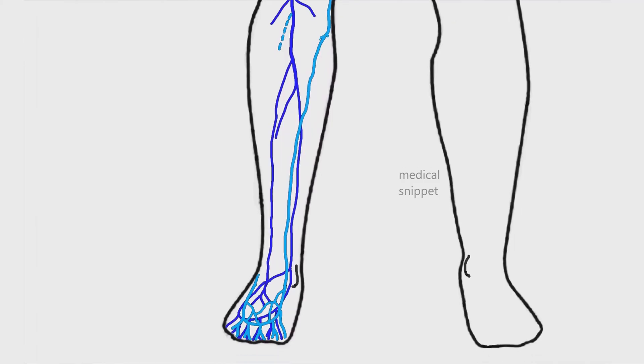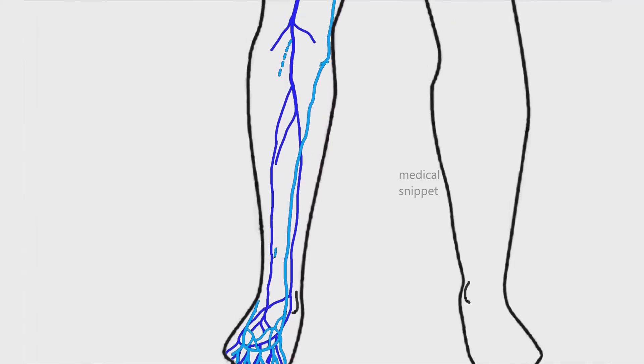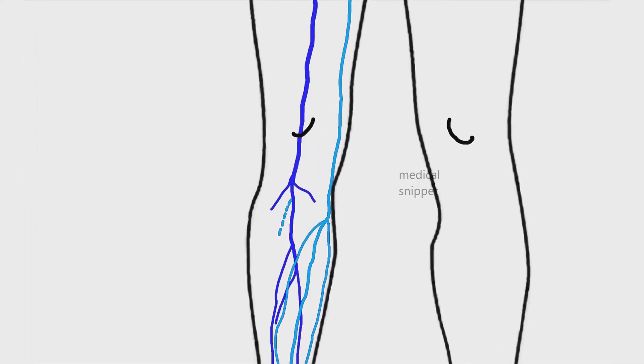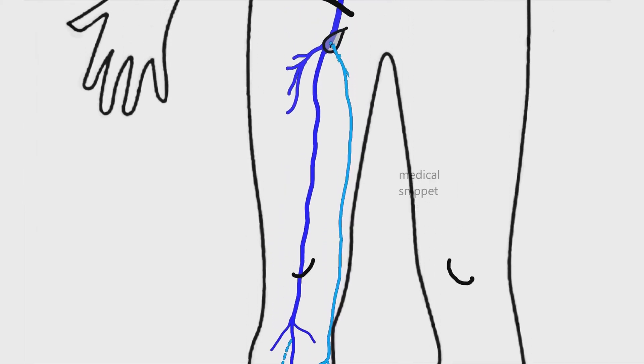The tributaries of the greater saphenous vein in the leg are mainly two: anterior venous tributary and the more constant posterior arch vein. In the thigh, it receives two large tributaries just before emptying into the common femoral vein. They are lateral accessory and medial accessory saphenous veins.